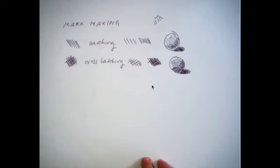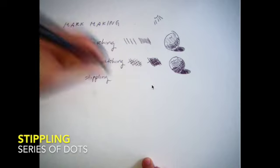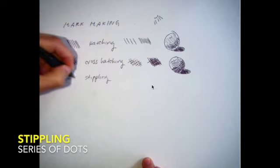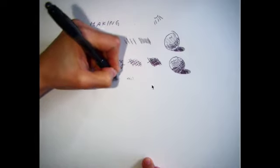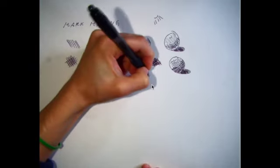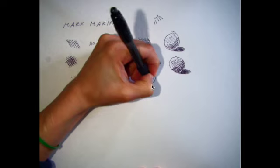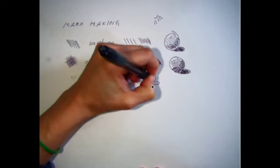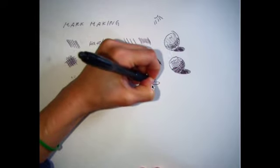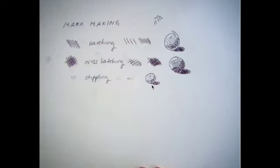And the last one is stippling. Stippling is just a series of dots. The denser the dots, the darker the value. The more sparse the dots, the lighter the value. I'm going to make a teeny tiny sphere here, so it doesn't take too much time. Lighter, darker, and denser.